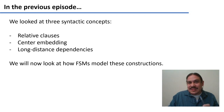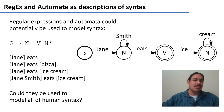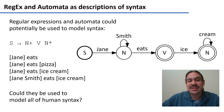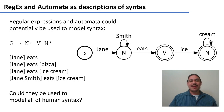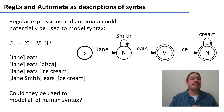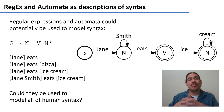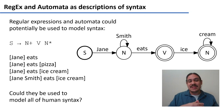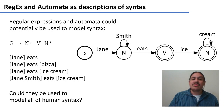We will now look at how finite state machines try to model these constructions. In our previous videos, we looked at sentences like 'Jane eats,' 'Jane eats pizza,' 'Jane eats ice cream,' 'Jane Smith eats ice cream,' and we figured out that there could be a regular expression that could model all of these. A sentence is one or more nouns for the subject — so Jane or Jane Smith — one verb 'eats,' and zero or more nouns for the direct object. So we have, for example, 'Jane Smith eats ice cream,' which is modeled in this finite state machine.